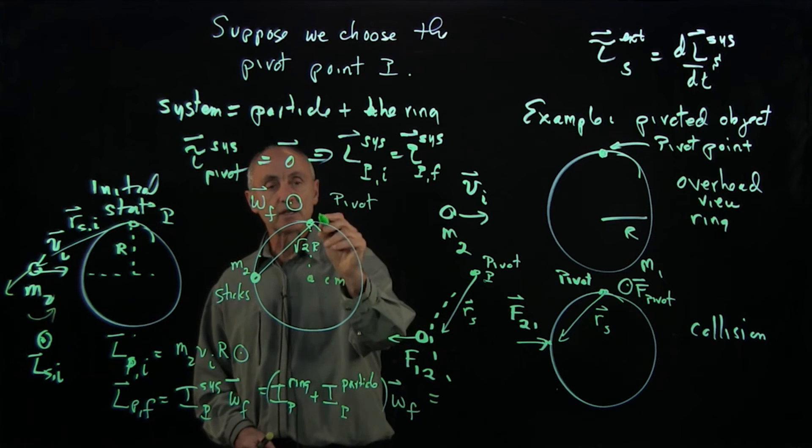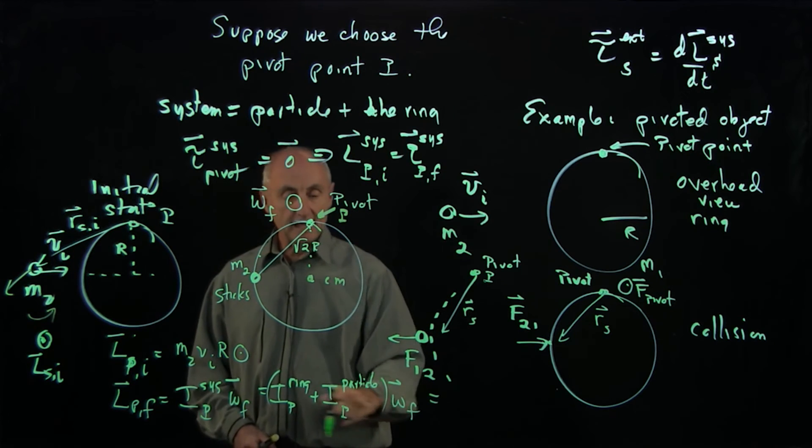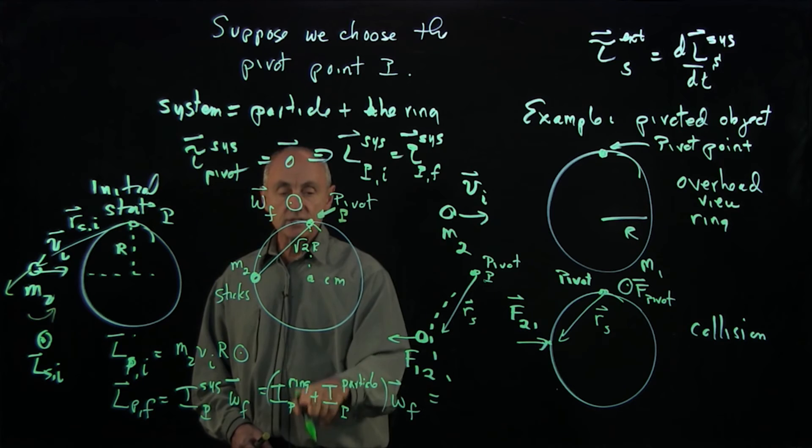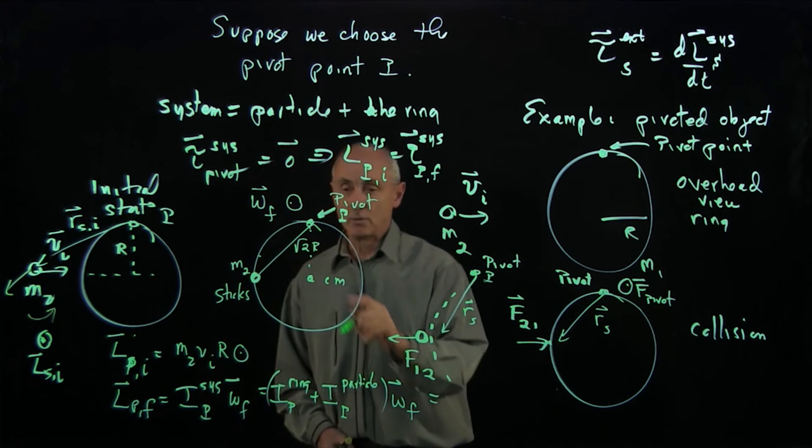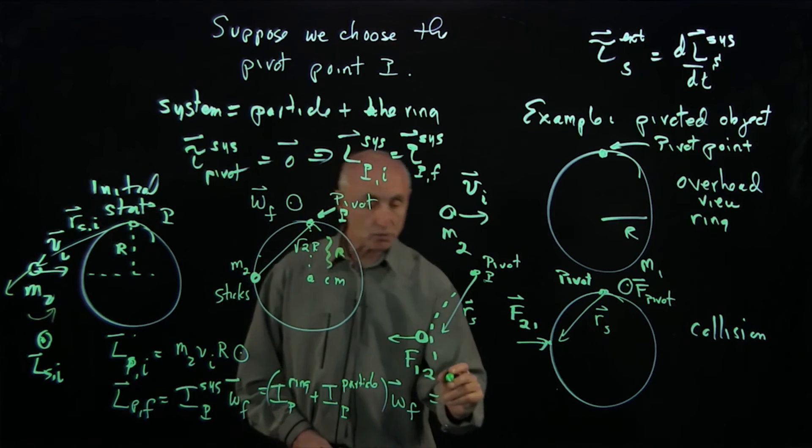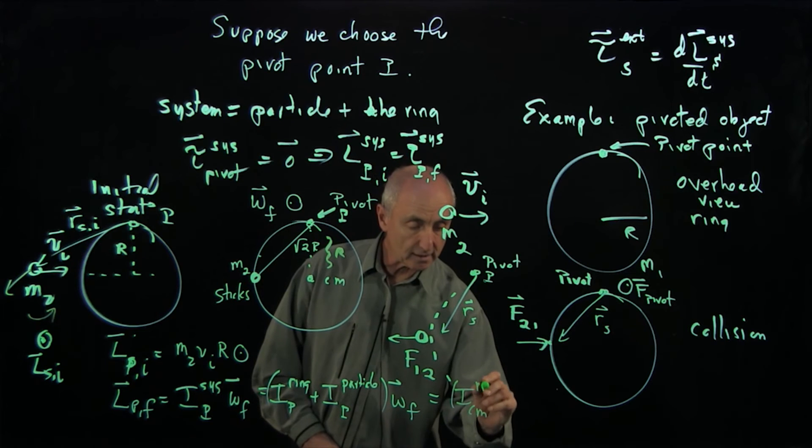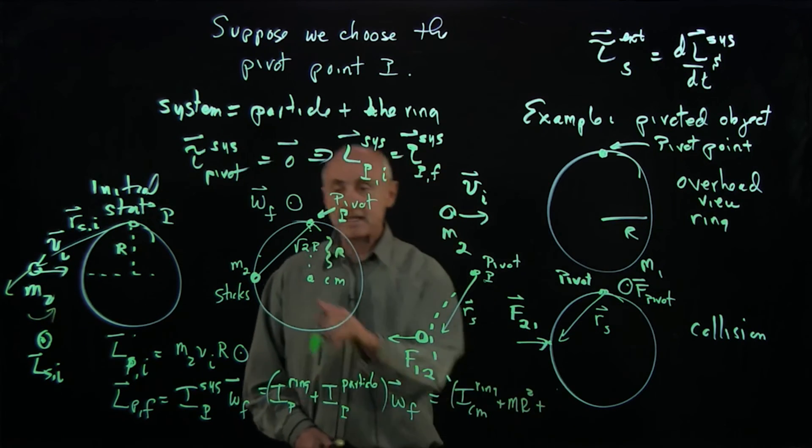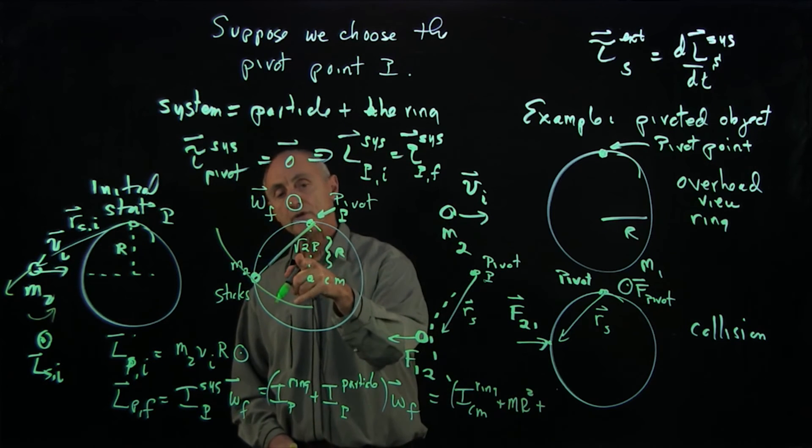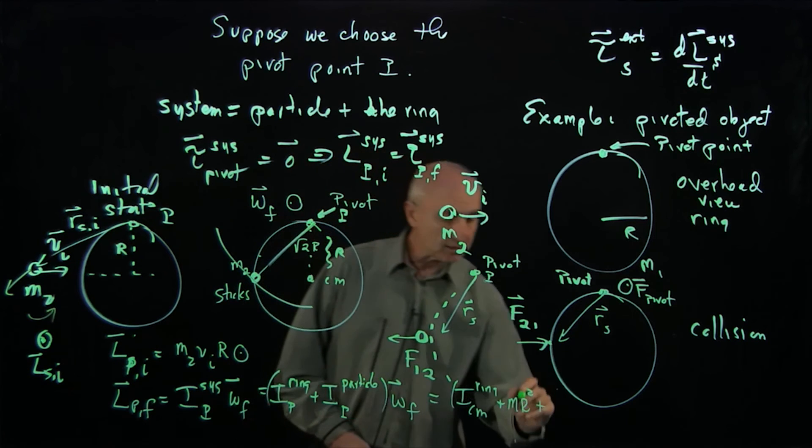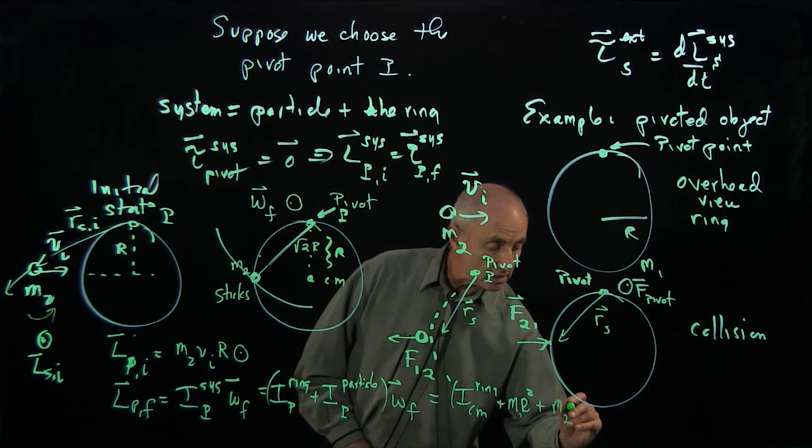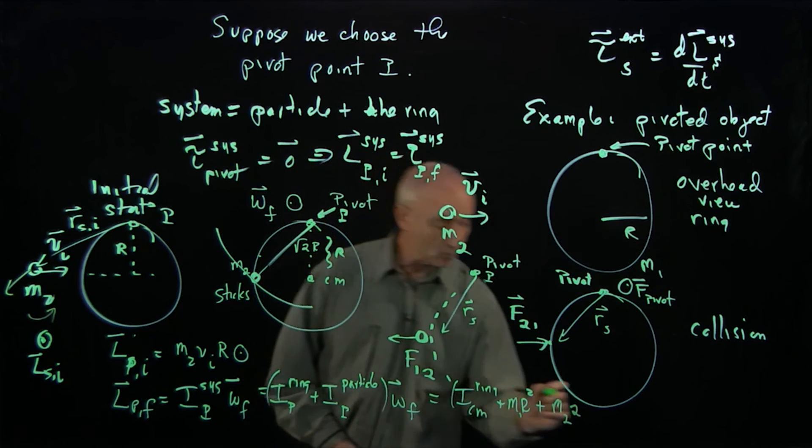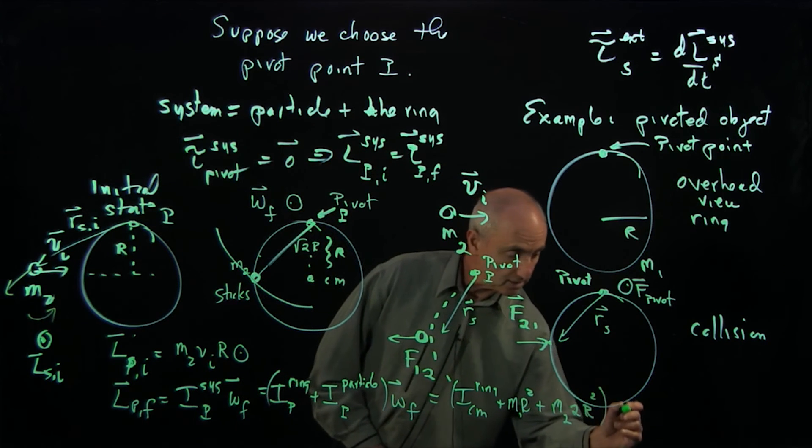Now, this is the center of mass. This is the pivot point, P. The angular momentum of the ring is the angular momentum about the center. We'll use the parallel axis theorem, angular momentum about the center of mass, plus the distance from the center of mass to the parallel axis, which is a distance R. So the first piece is ICM ring plus M1R squared. And the angular momentum about the particle, this is going in a circle of radius root 2R. So when we square that, by the way, this was mass of the ring was 1. Mass of the particle was M2 times R squared, which is this distance squared, which is 2R squared times omega final.